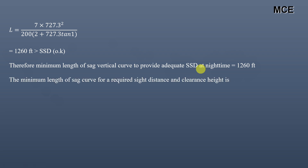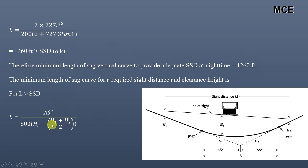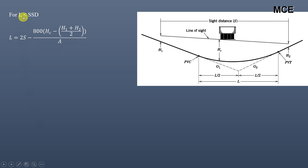Now we have to find the clearance height under this underpass. AASHTO has provided another formula for the minimum length of the sag curve for a required sight distance and clearance height. If L is greater than SSD, the length equals A times S squared divided by 800 times (HC minus (H1 plus H2) divided by 2). If L is less than SSD, the formula is 2S minus 800 times (HC minus (H1 plus H2) divided by 2), all divided by A.